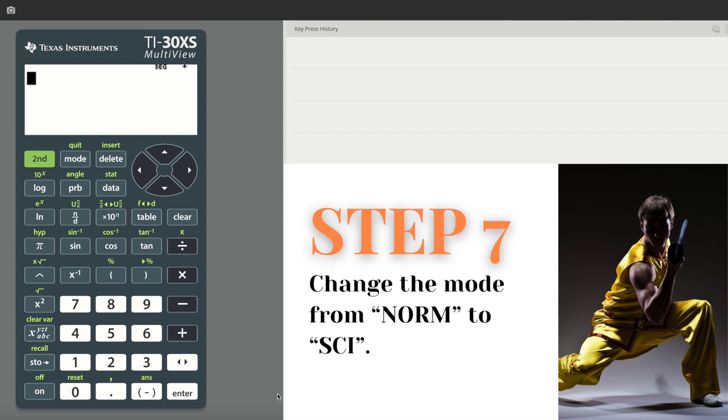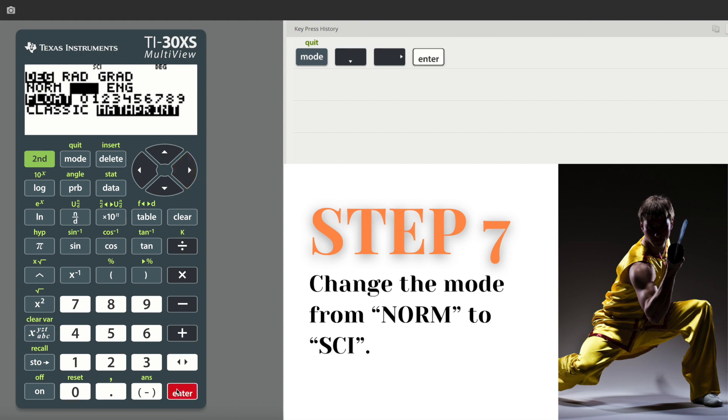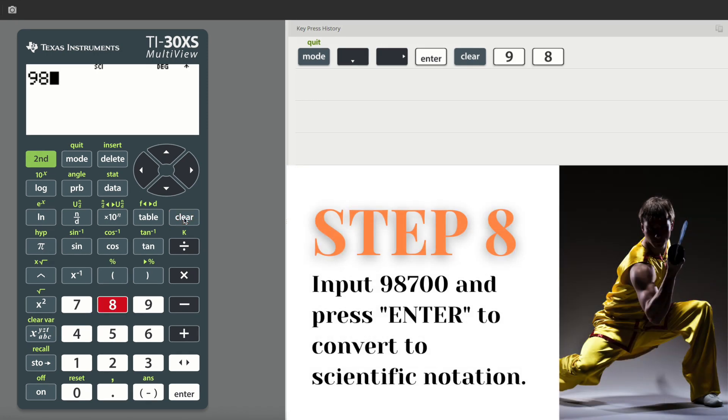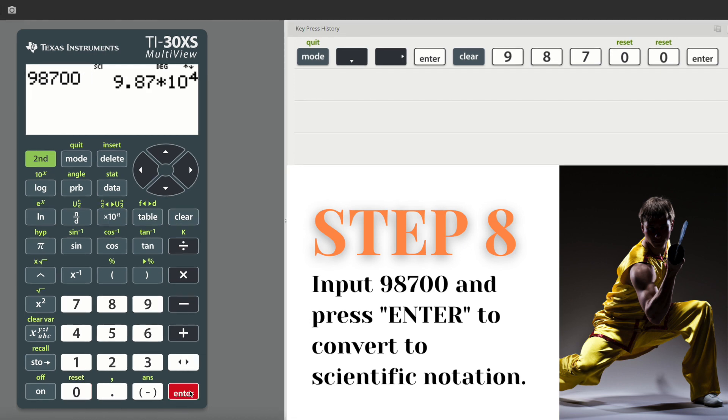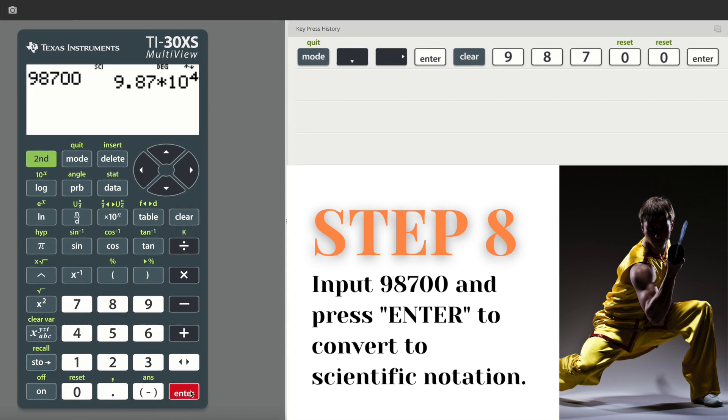Now about scientific mode, this might come in handy for your science test. So go ahead and hit mode. And then see the second line where norm is selected. I want you actually to arrow over to the next one side, press enter to select that scientific mode, and then clear to get out of that screen. And now it's going to do something interesting with numbers you input. So let's input 98,700 and then hit enter. And take a look at what happens. It shoots out your number in scientific notation form.